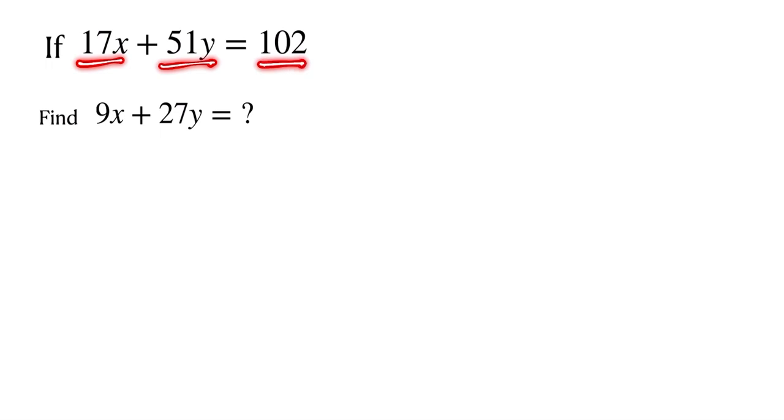This is our question: 17x plus 51y is equal to 102. We have to find the value of 9x plus 27y. At first we focus on this part of the question. This is 17x plus 51y is equal to 102.